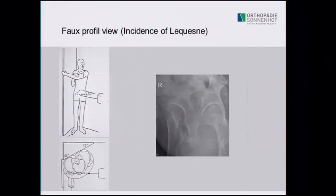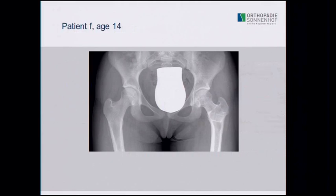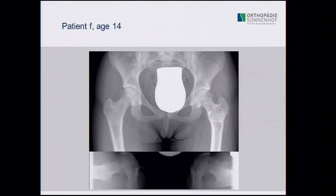We also perform the Dunn-Wippstein-Müller view in all our patients with suspicion of impingement, in order to see on a second plane how the anterior part of the femur looks.